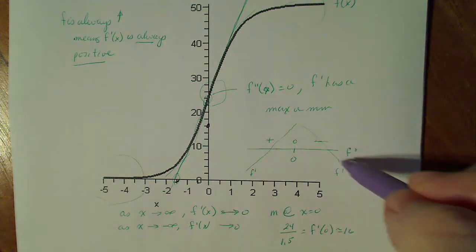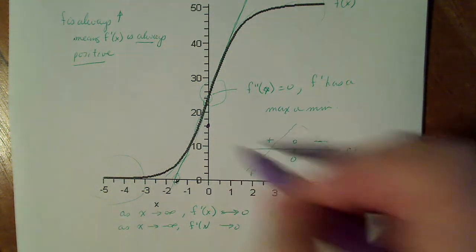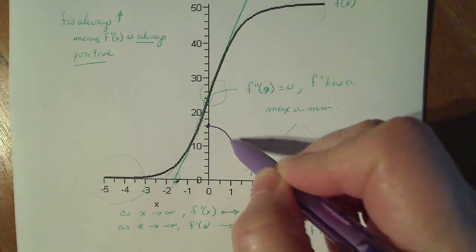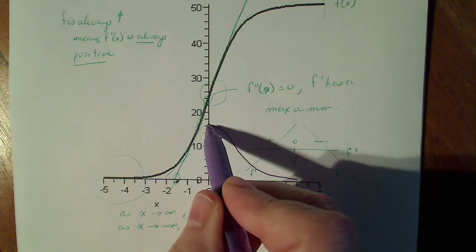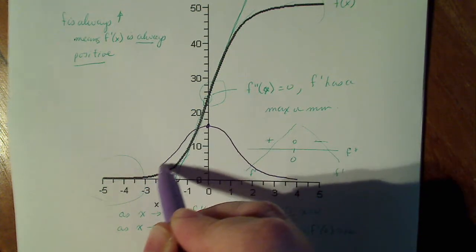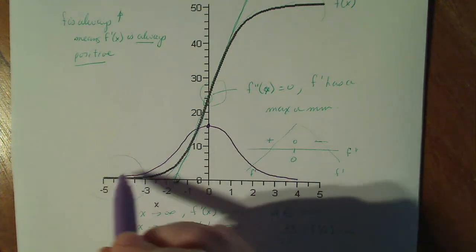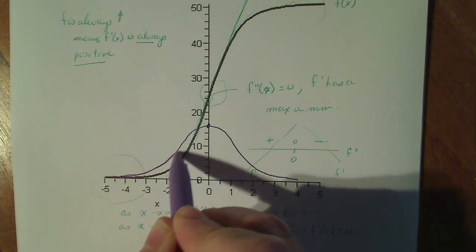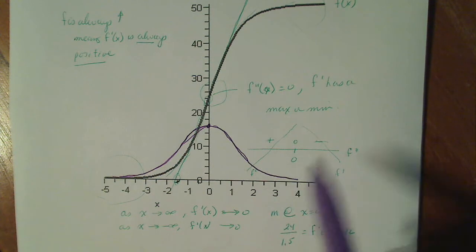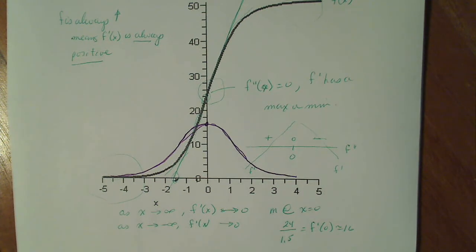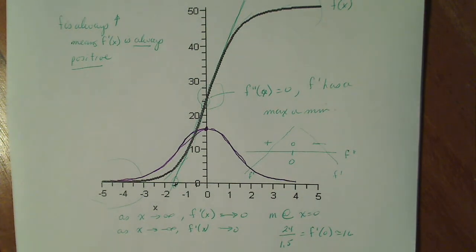And it should be decreasing afterwards, but yet go towards zero. So it's going to do something like this. And then it's going to do the same thing over here. Again, that's an approximate drawing of it in purple, which is quite accurate given just such a simple graph, but that's how that works. Thanks.